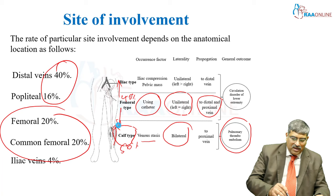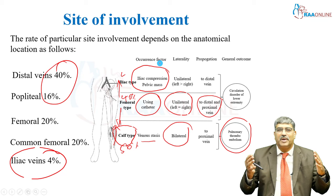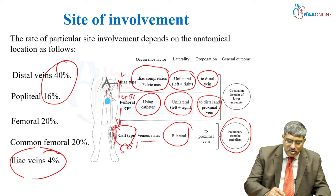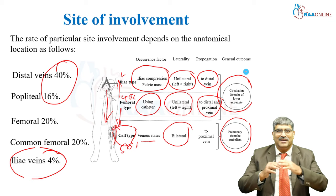The less common location is the iliac vein, at around 4 percent. Here the causative factor is iliac compression or a pelvic mass due to pregnancy or another cause. Left is more common than the right side. Propagation of the thrombus is usually distal. In both femoral and iliac involvement, the general outcome is that circulation of the lower extremity is compromised.